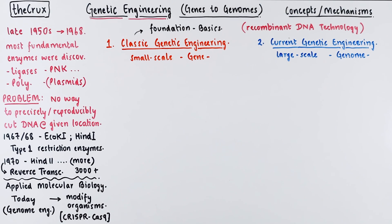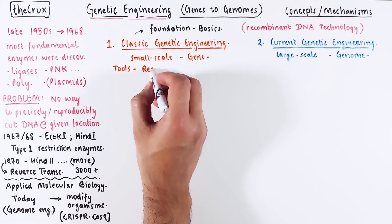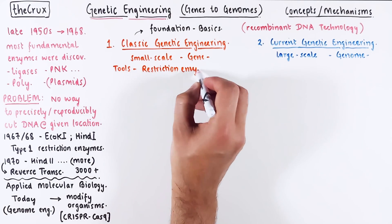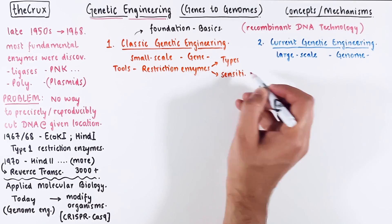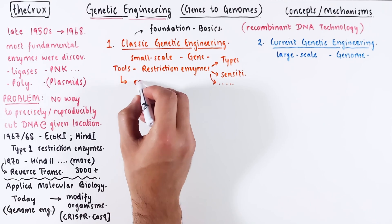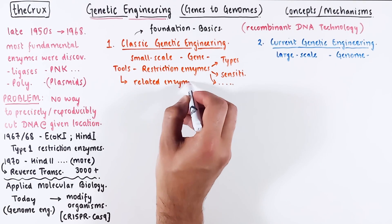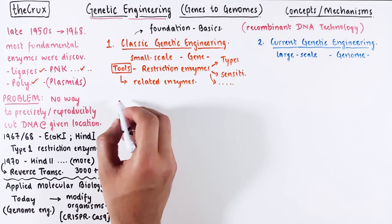So what can you expect from this series? Let's break it down step by step. We will begin with the basics, diving into essential tools like restriction enzymes. We will explore the various types of these enzymes, how they operate, their sensitivities, and scenarios when they might not work as expected. Within this toolkit, we will also touch upon related enzymes you might already be familiar with.